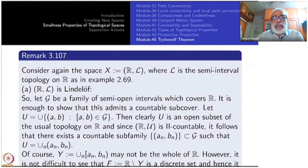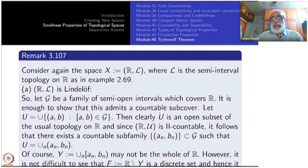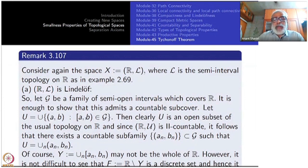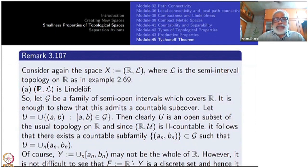Let G be a family of semi-open intervals which cover R. It is enough to show that G admits a countable subcover. I am using that S is actually a base here — open subsets of the form [A, B) with A closed and B open. That is the definition of the topology L. Take a cover by these open sets; since this is a base, show that it has a countable subcover.